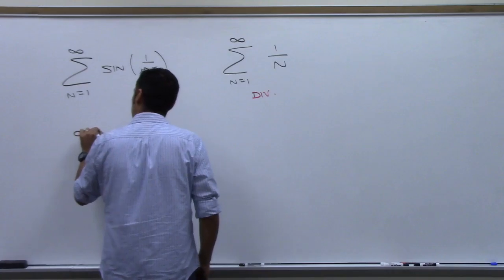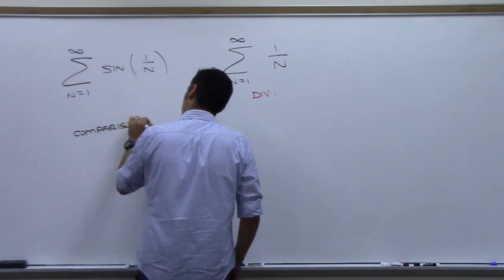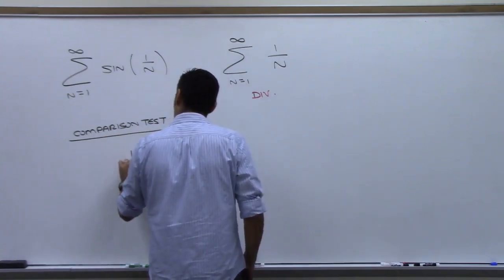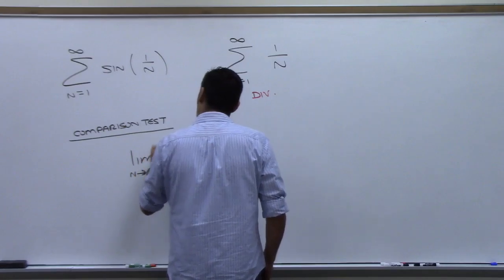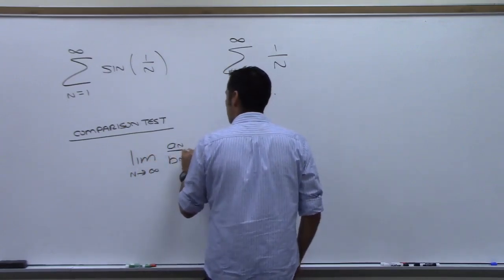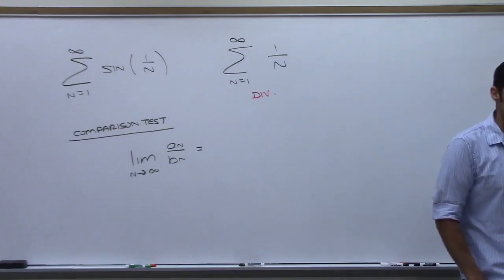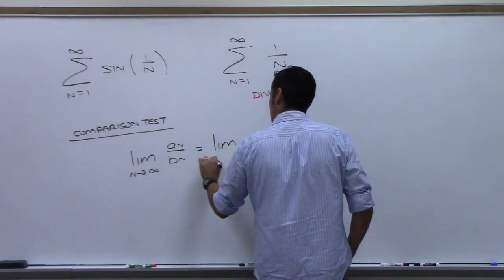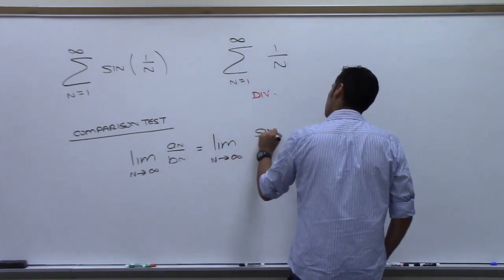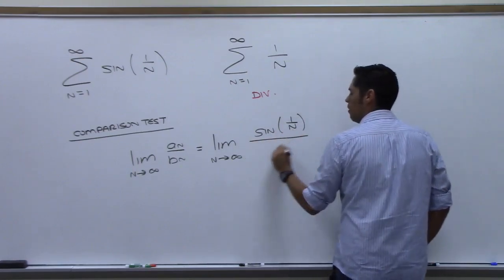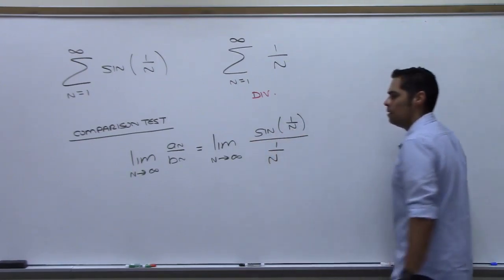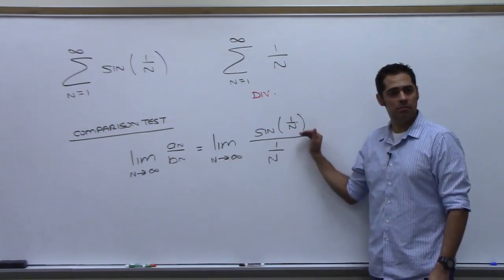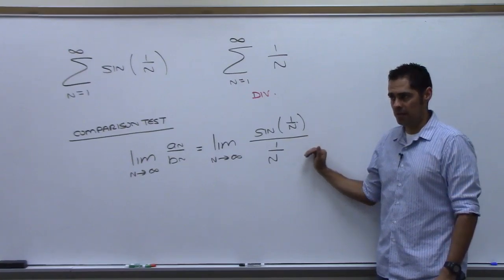I'm doing comparison test part three. I'm going to compute the limit as n goes to infinity of a_sub_n over b_sub_n, which is the limit as n goes to infinity of sine(1/n) over (1/n). Letting n go to infinity gives 0 over 0, so I can apply L'Hôpital's rule.